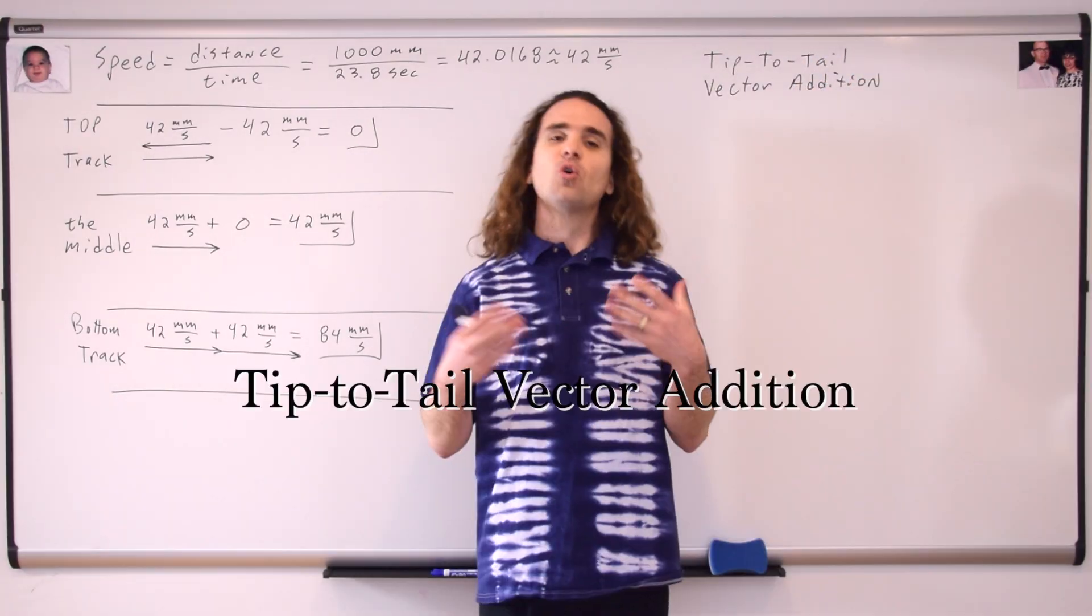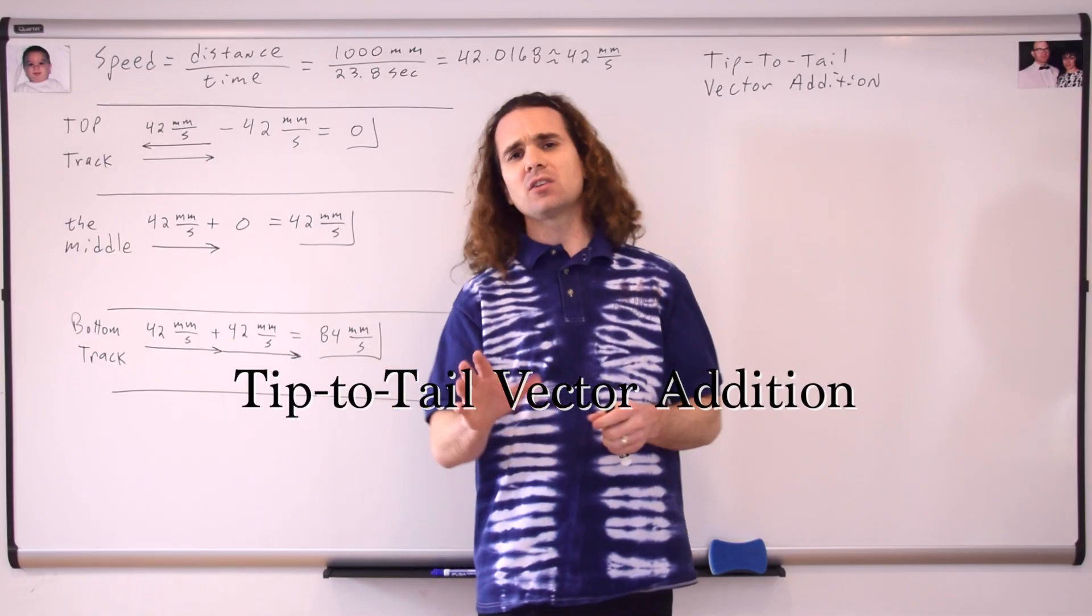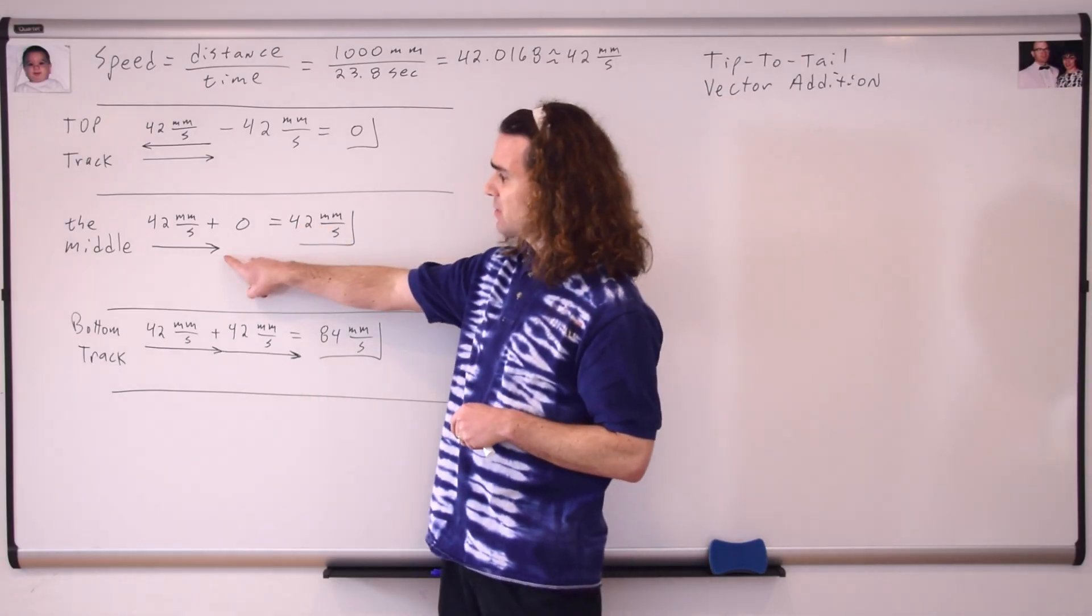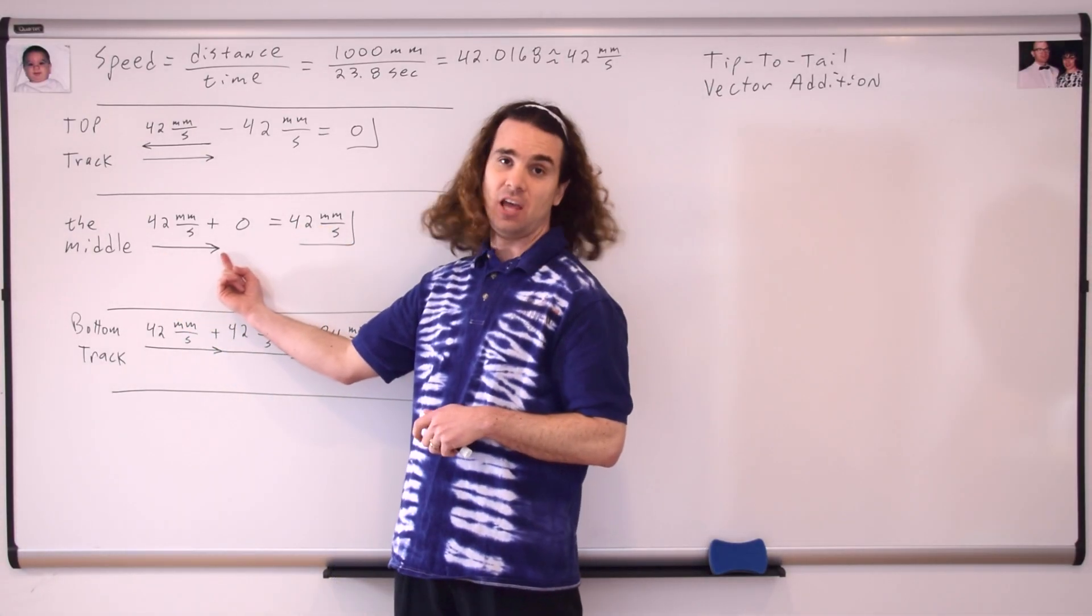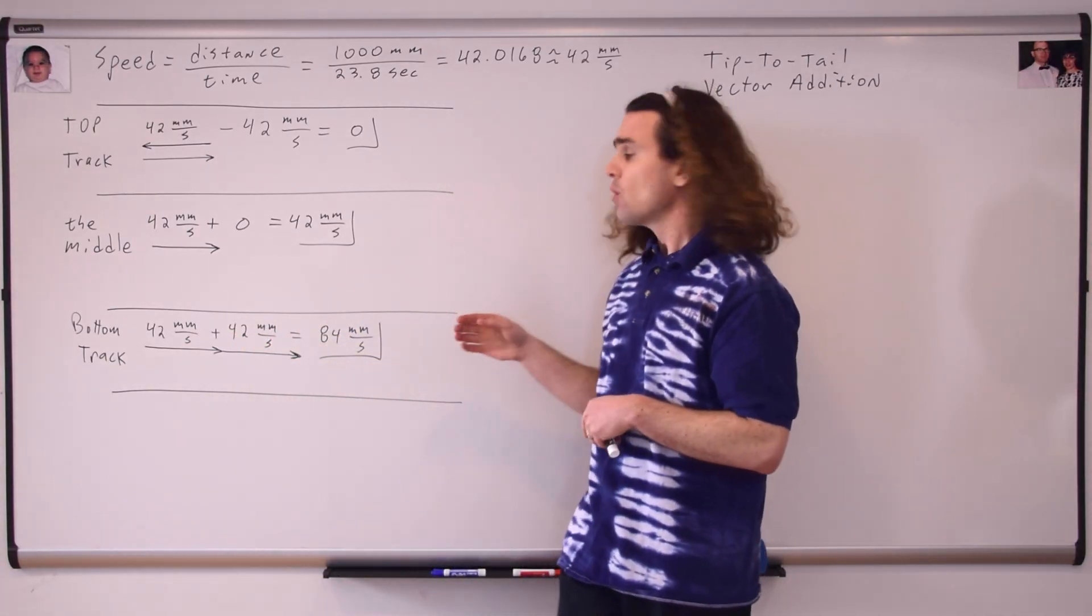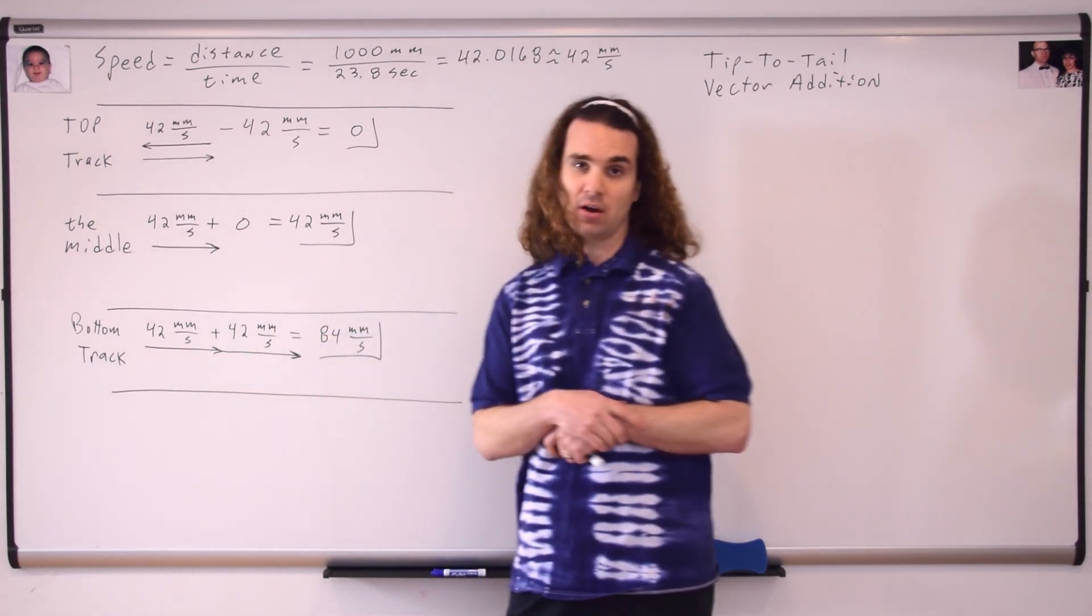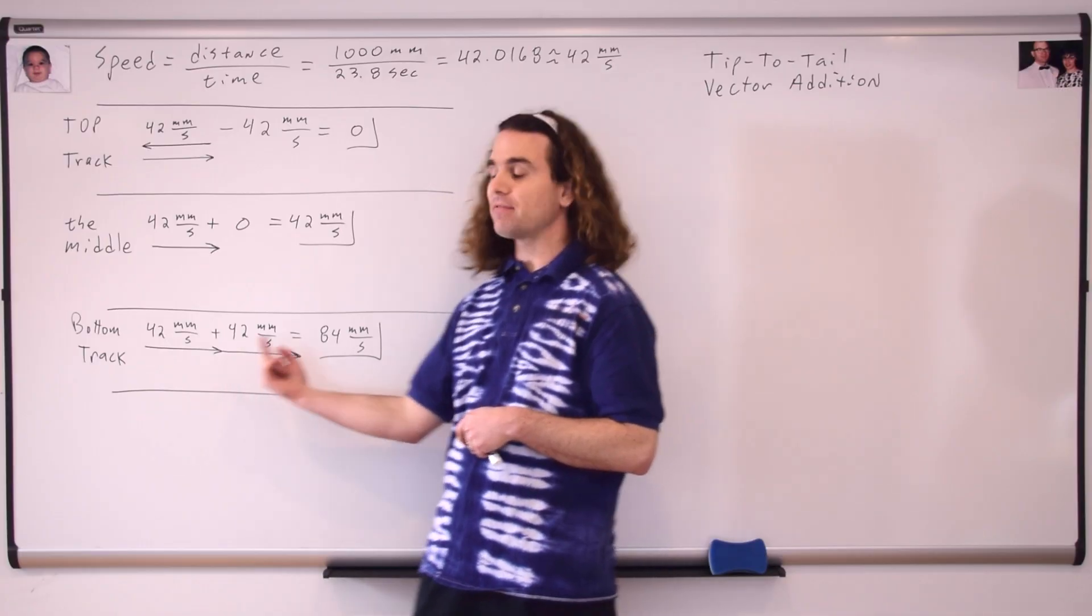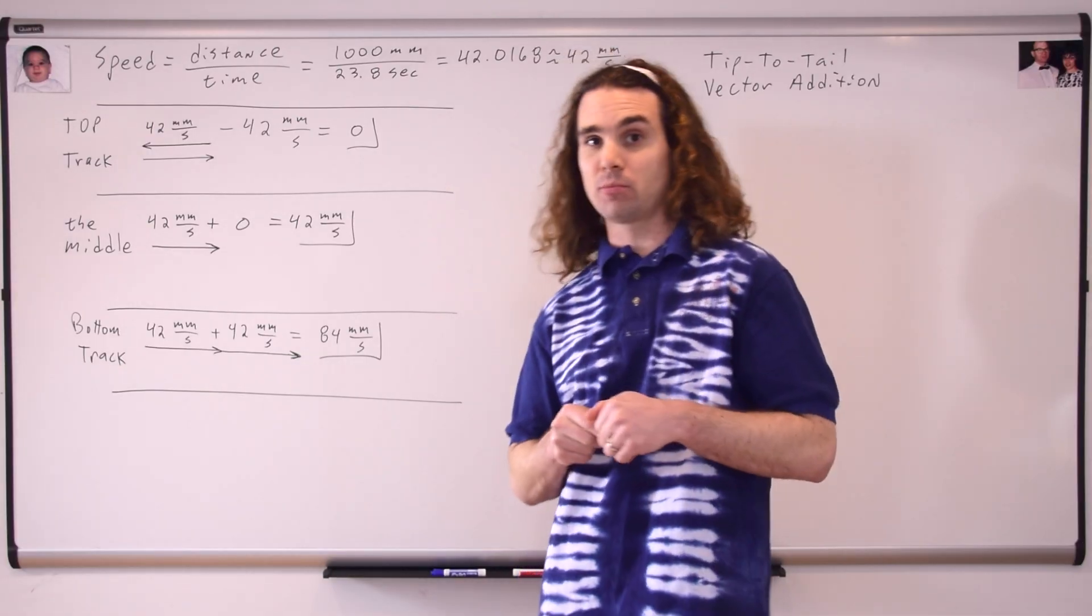What? That's weird. What you've all done here instinctively is called tip-to-tail vector addition. It's also sometimes called tail-to-tip vector addition, but it's the same thing. So we have a representative vector right here. And you can see this is the tail of the vector, and this is the tip of the vector. So for our bottom track, we have both objects, the track and the race car, were moving to the right, so both vectors are going to be drawn to the right.